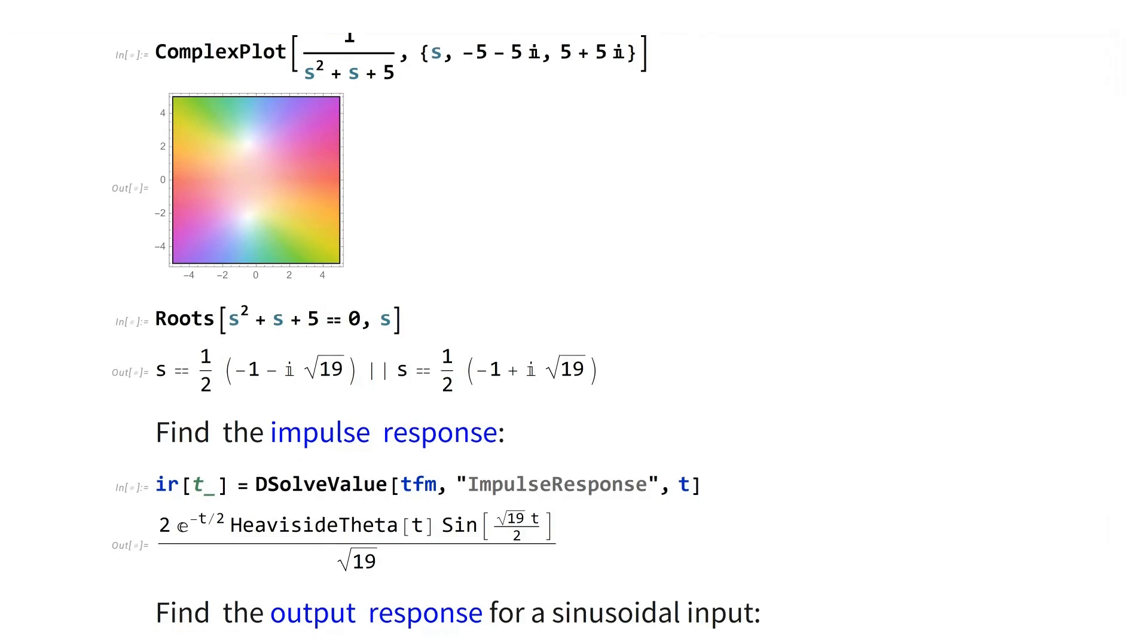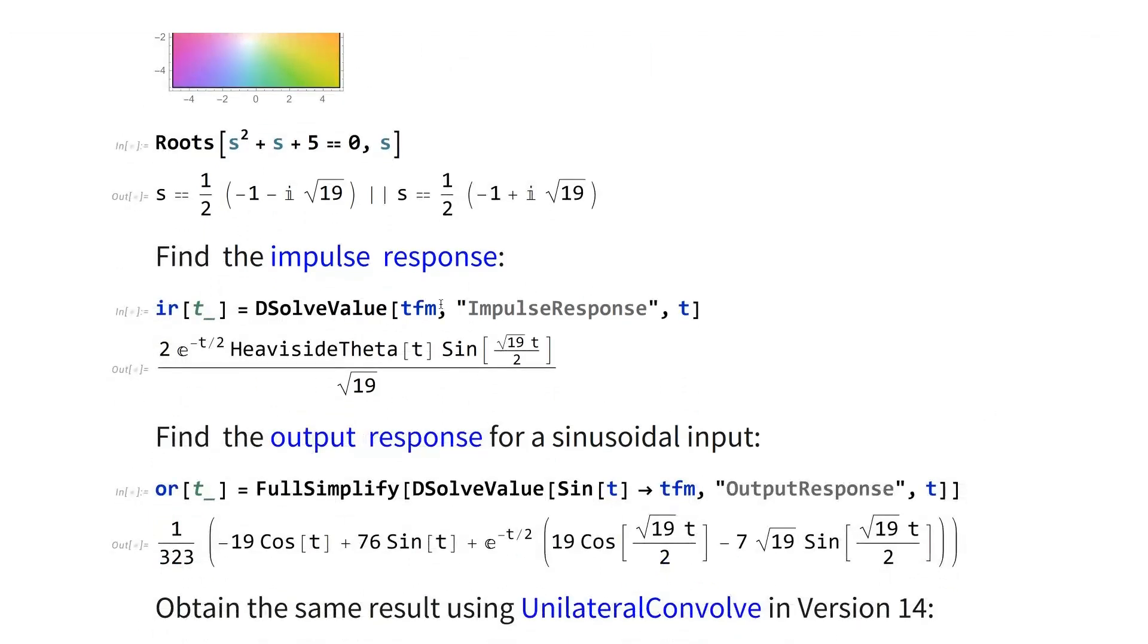And so if you ask DSolveValue in the new release to take this transfer function model, which was never done before, and find the impulse response, the response to direct delta, it gives you back this combination of exponential decay and oscillatory behavior that comes from the negative one-half. And the square root of 19 comes from there.